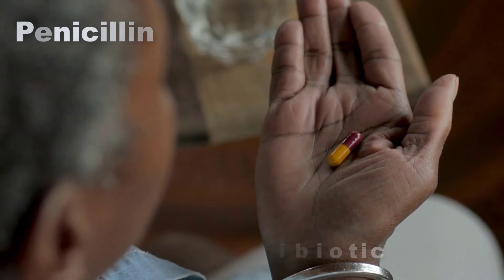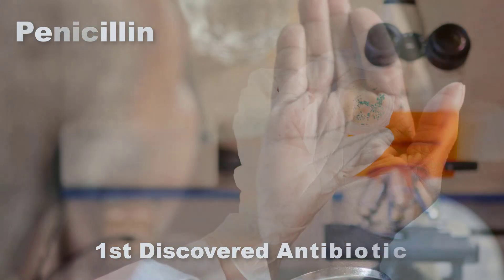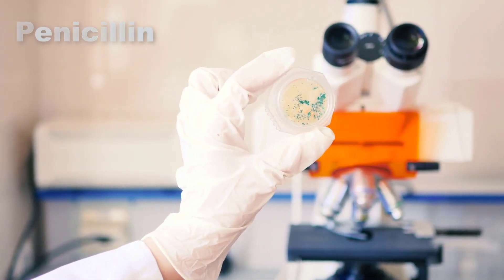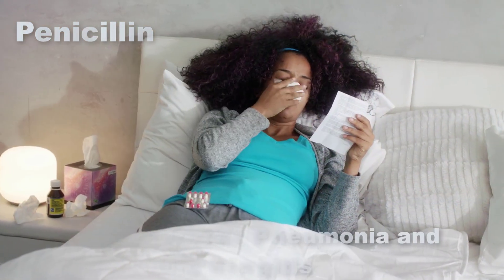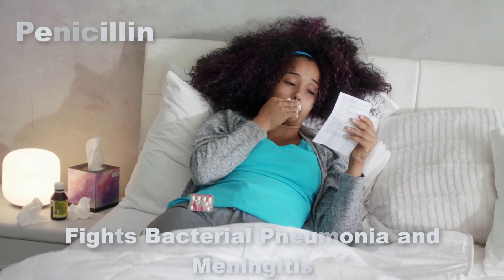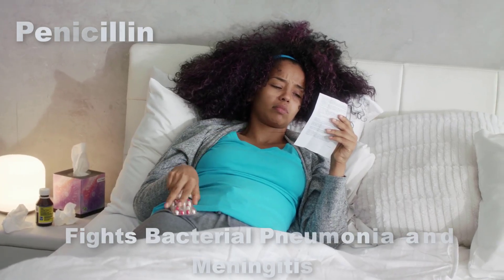Penicillin is the first antibiotic ever discovered. It was produced by an airborne mold called Penicillium notatum. Penicillin is a weapon against deadly diseases such as bacterial pneumonia and meningitis.